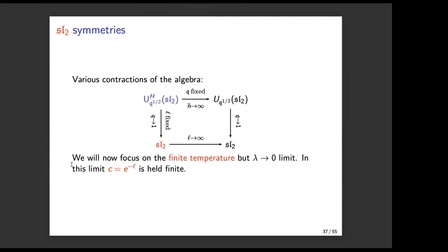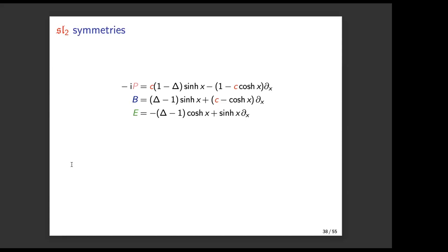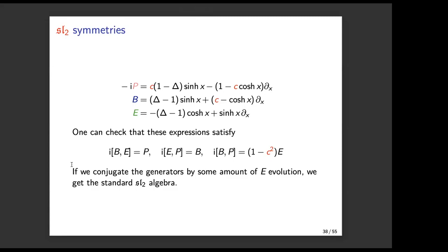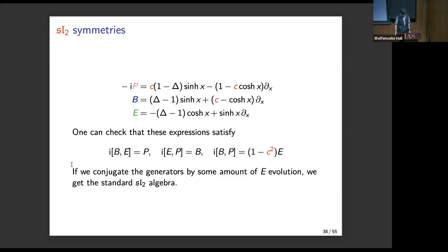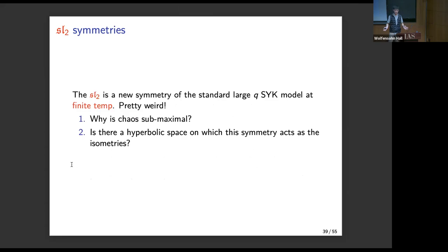This other limit gives us a bit of a surprise. Just by plugging in the concrete expressions, we get a particular algebra with expressions for p, d, and e that are identical to the previous slide except for a factor of c. In particular, we still get the SL2 algebra even at finite temperatures. The only modification is the factor of (1 - c^2) multiplying e, which can be reabsorbed into the definition. This factor of (1 - c^2) is important: c is related to the length of the wormhole, which is held fixed. This immediately poses two questions: first, we found an SL2 symmetry but chaos is sub-maximal — what gives? And second, is there a hyperbolic space on which this symmetry acts as an isometry?